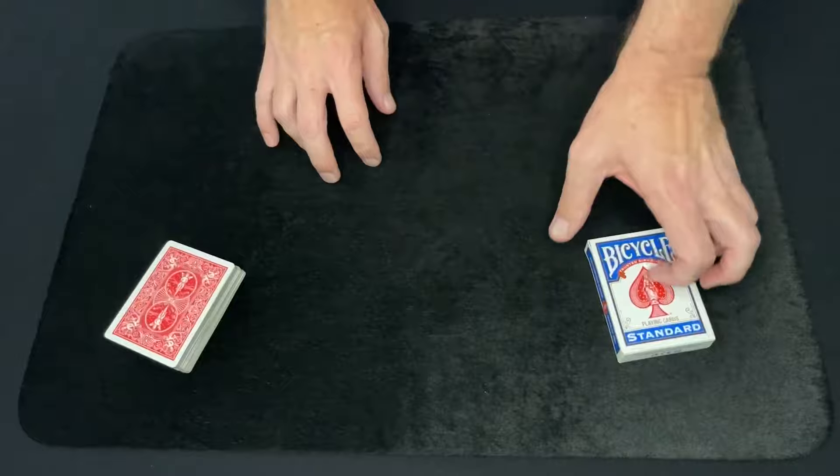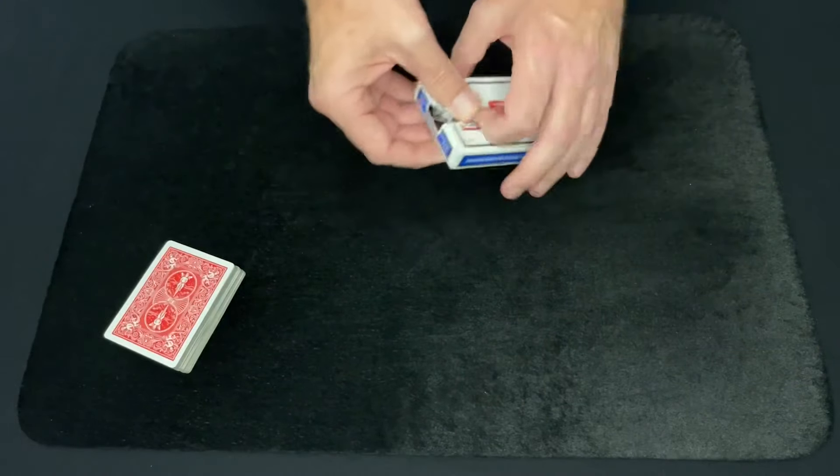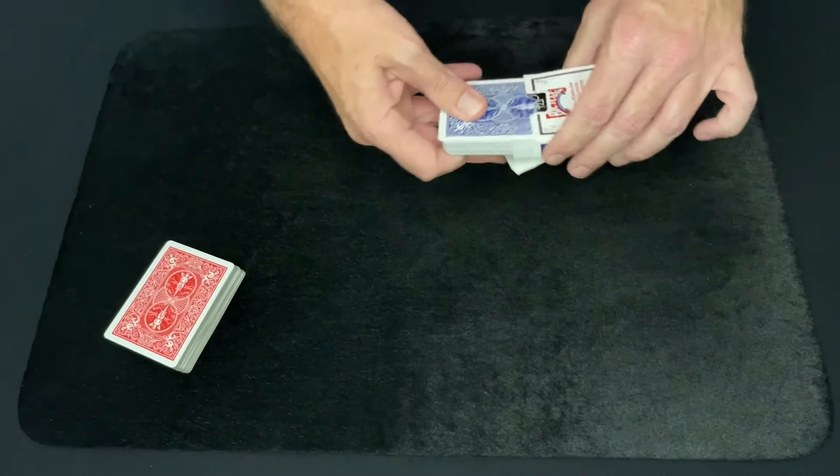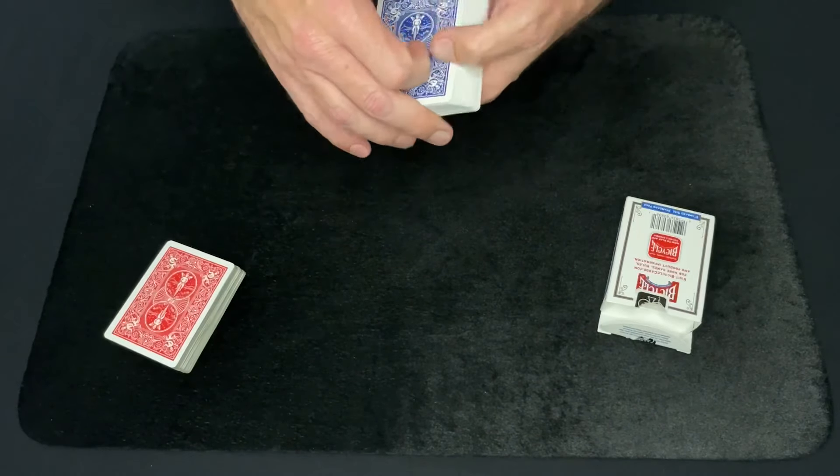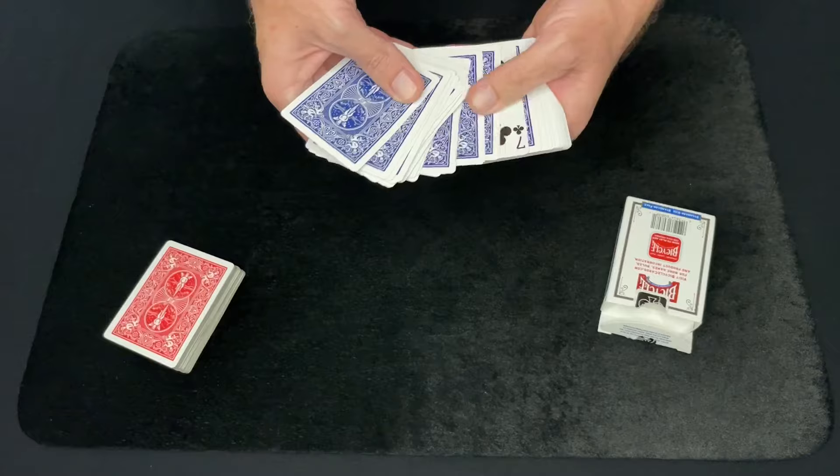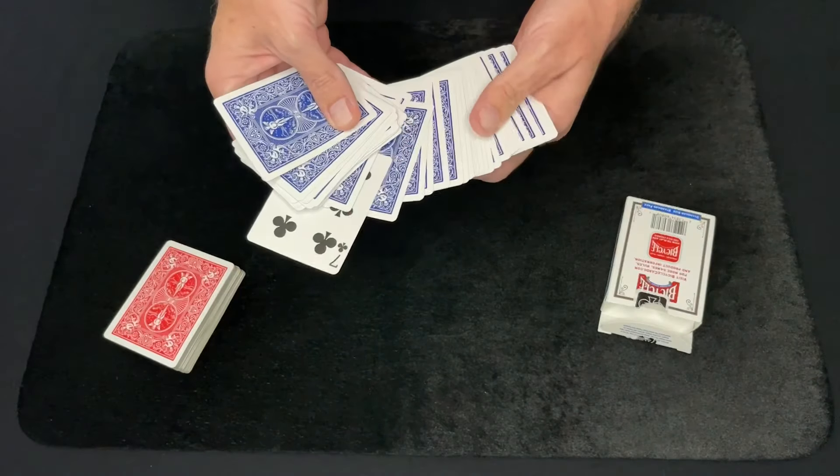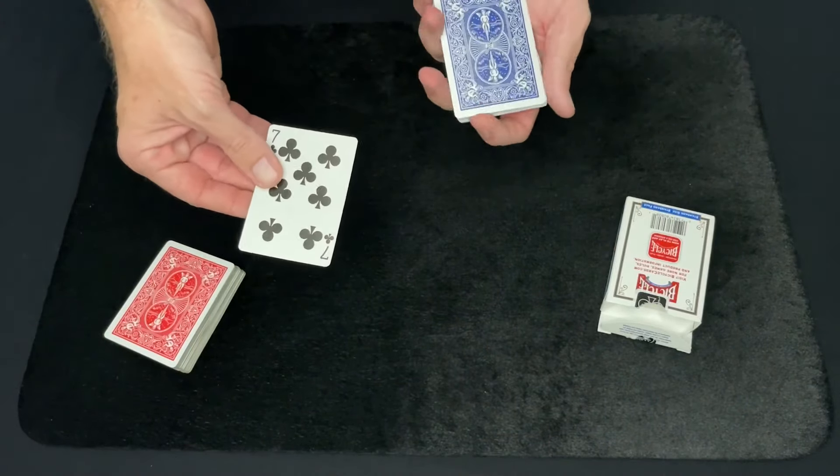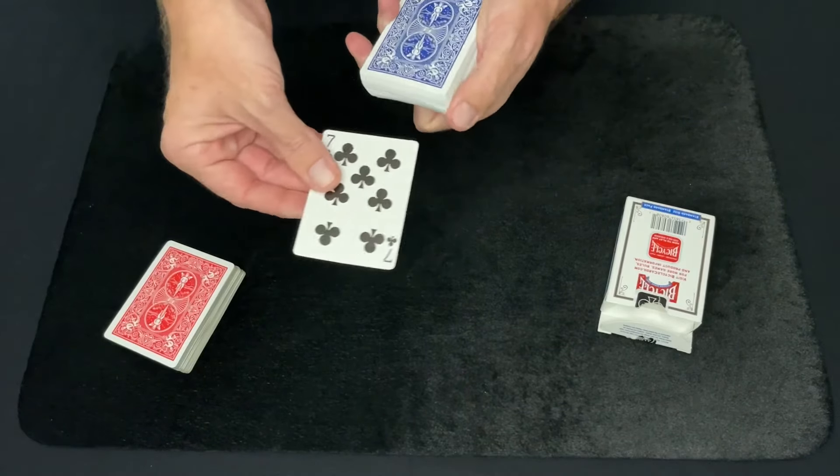Before I started the trick, I actually put one card face up inside of this deck as my prediction, and wouldn't it be amazing that the card that I put face up in this deck matched the spectator's card that they stopped me at. Look at this, there's going to be one card face up inside this deck, the seven of clubs, was that your card? No, that wasn't your card?